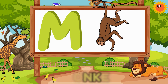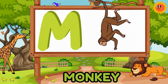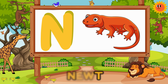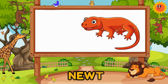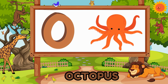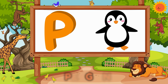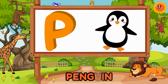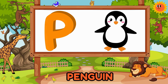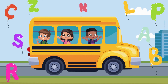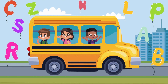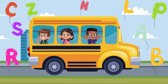M is for monkey swinging through the trees. N is for newt moving with ease. O is for octopus with tentacles so grand. P is for penguin walking through the sand. Let's sing our phonics from A to Z. With animals galore, come sing with me.